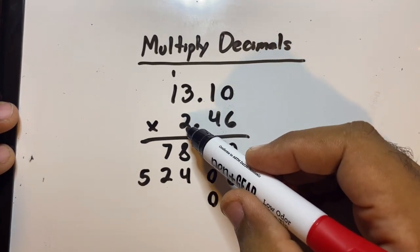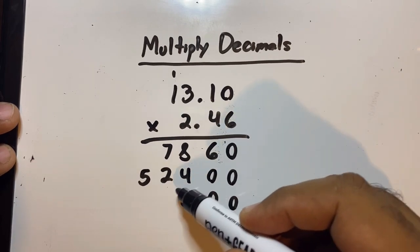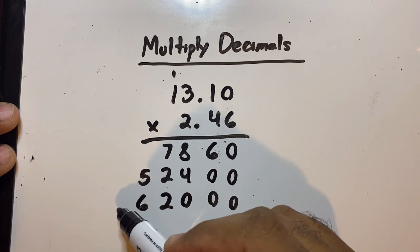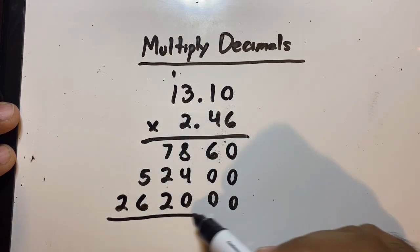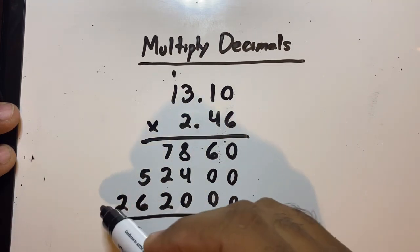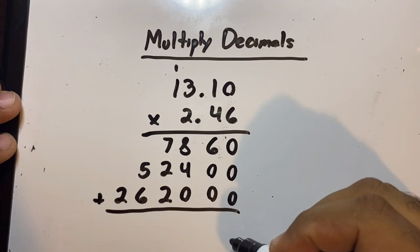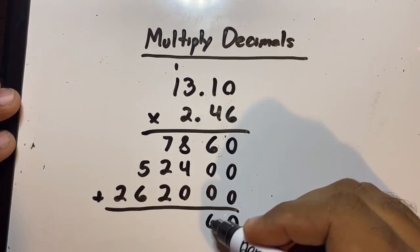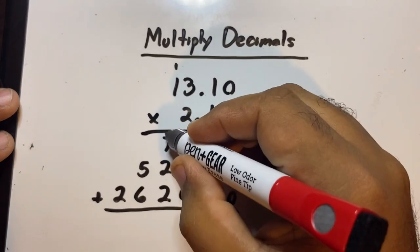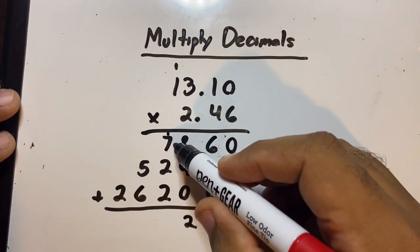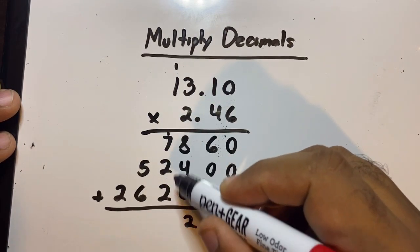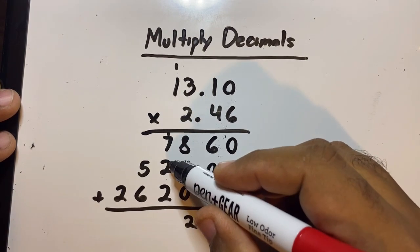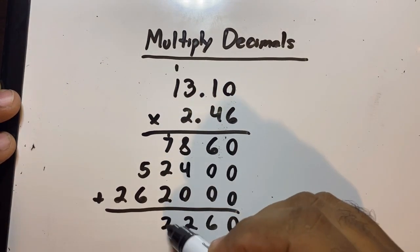Now two times zero is zero. Two times one is two. Two times three is six. Two times one is two. Now we add: six plus zero is six. Eight plus four is 12 — carry the one. Seven plus two plus two plus one is twelve — carry the one.